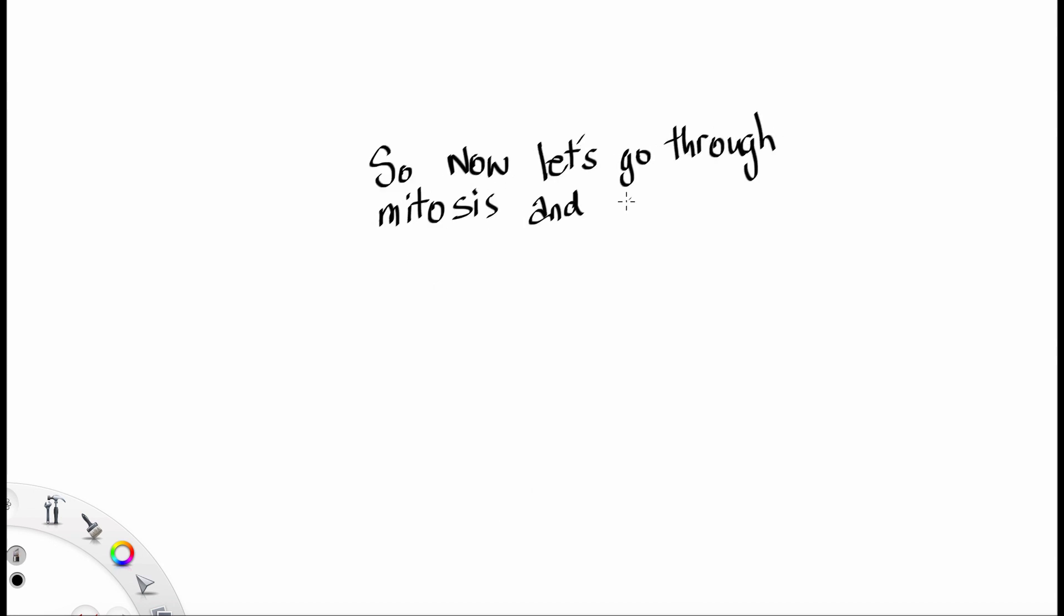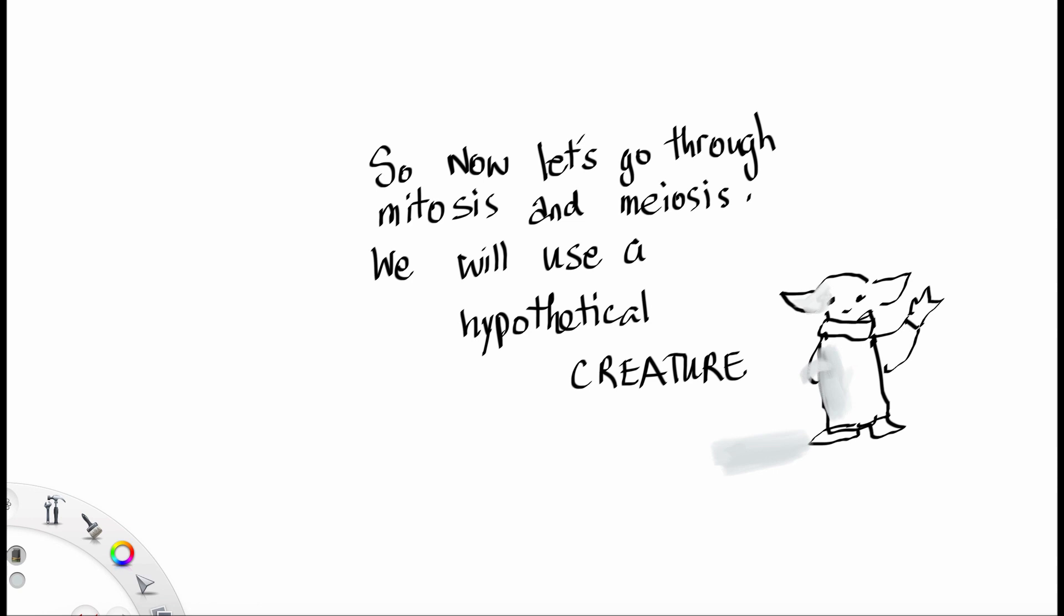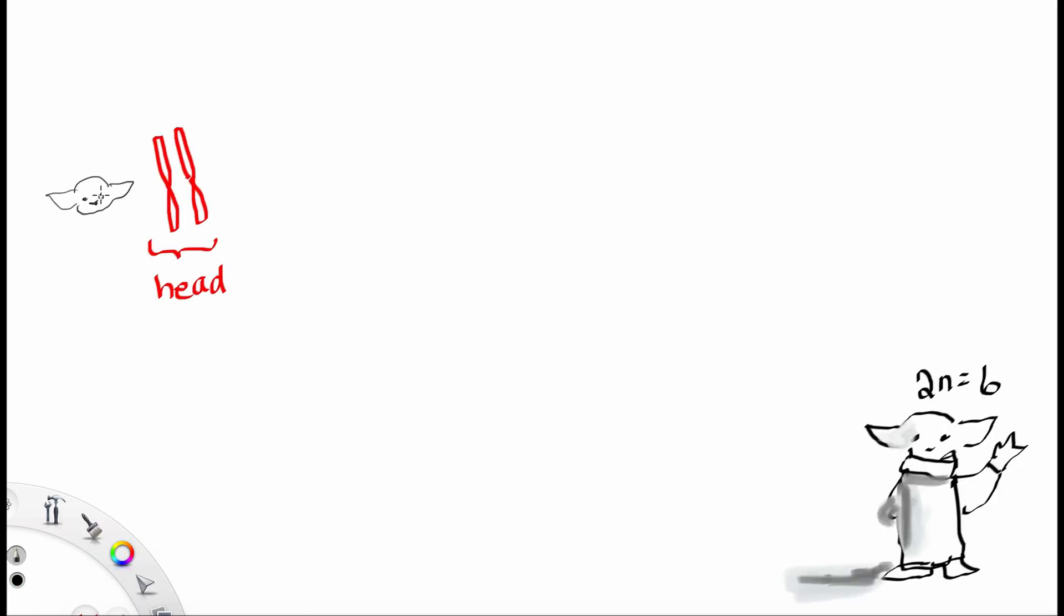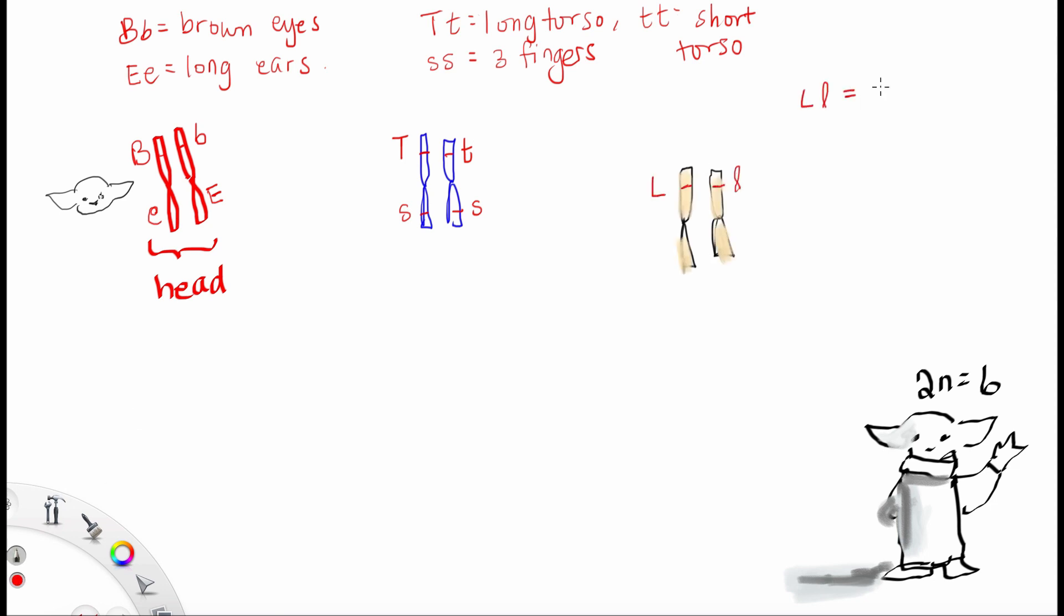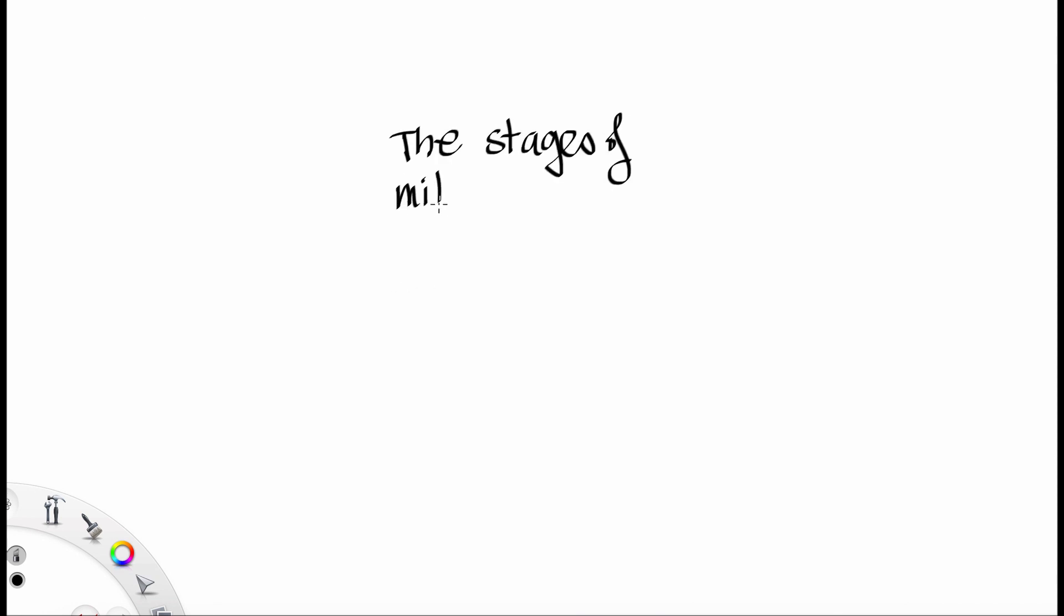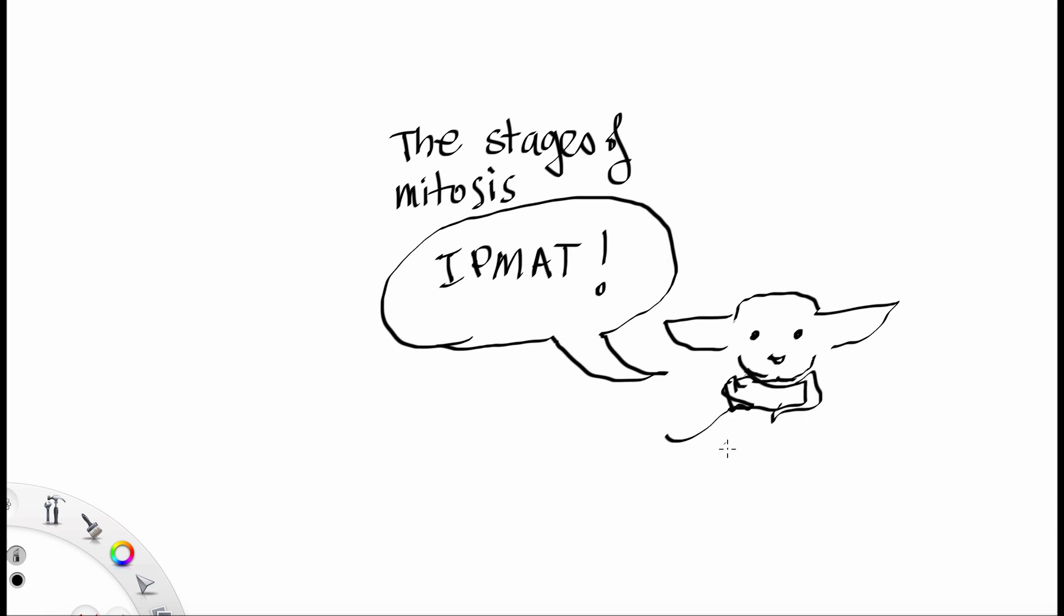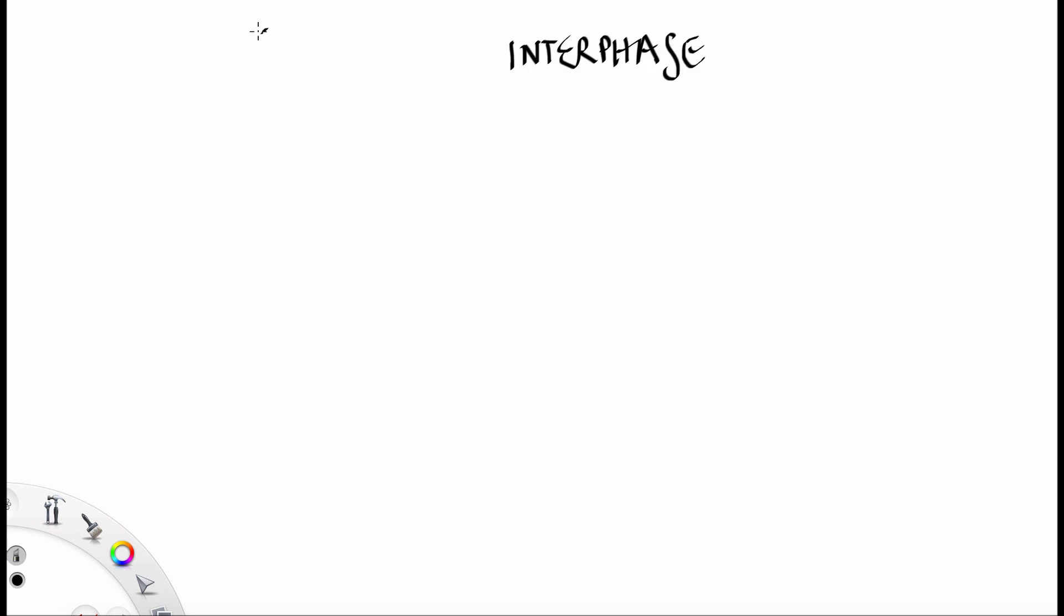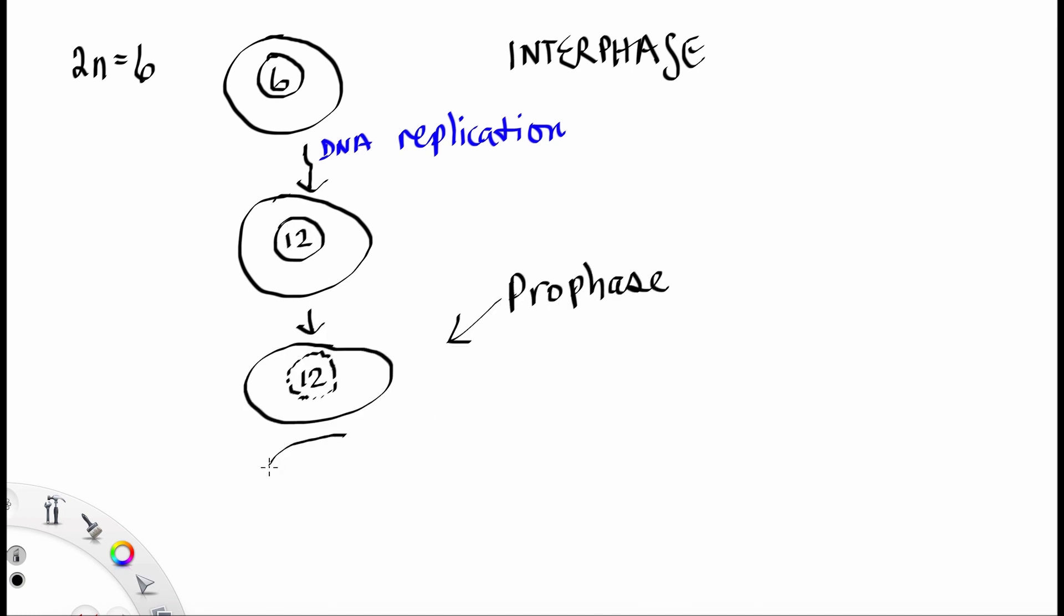So now, let's go through mitosis and meiosis, and we will use a hypothetical creature from another galaxy. And this hypothetical creature has a pair of chromatids, homologous chromatids, that we've color coded, that code for the head and torso and feet. So the stages of mitosis is IPMAT. We've got interphase, where we start out with 6 chromatids. DNA replication happens, so now we have 12 chromatids.